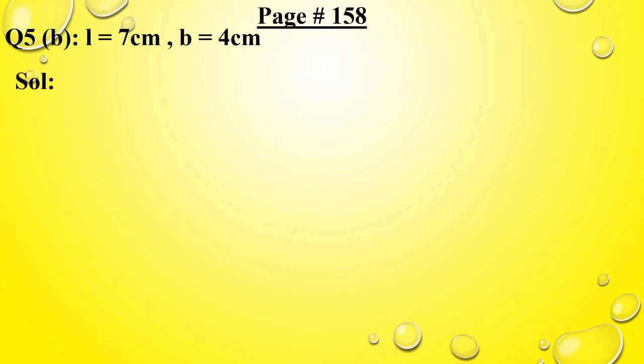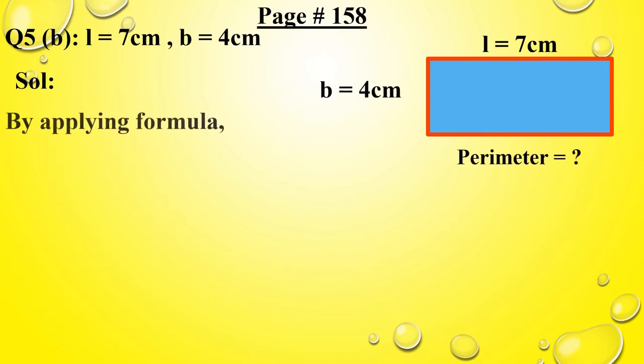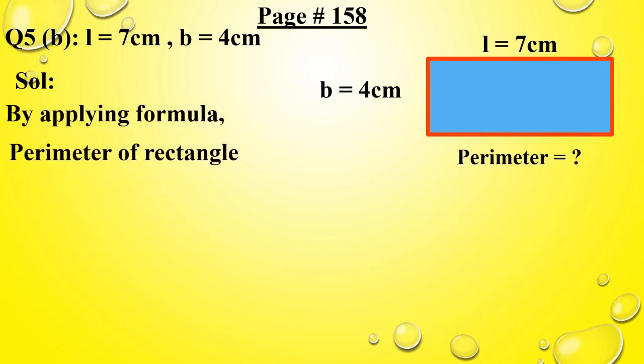We have done question 5 part A in our previous video. Now we will do part B. Length is given 7 cm and breadth is given 4 cm. First of all, I am going to draw a rectangle here. L is equal to 7 cm, B is equal to 4 cm. We have to find the perimeter, so first of all we will apply the formula, which is: perimeter of rectangle equals to 2 into (L plus B).